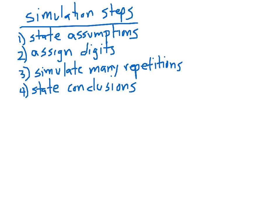These four steps are the steps for every simulation problem. First, you state any assumptions in the problem. Then we assign digits — that will feel very much like assigning numbers for a simple random sample. Then we simulate using many, many repetitions; I'm going to do this using the table of random digits, though you could also use a calculator or computer. Finally, state a conclusion at the end.